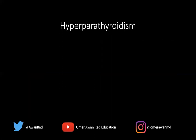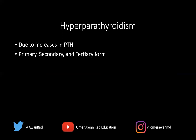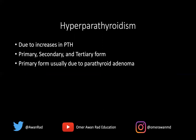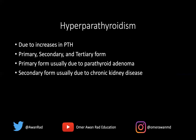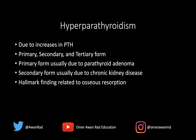This is an example of hyperparathyroidism. Hyperparathyroidism is due to increased parathyroid levels. There's a primary, secondary, and tertiary form. The primary form is most commonly related to a parathyroid adenoma. The secondary form is usually related to chronic kidney disease, which we see very commonly. The hallmark finding in all forms of hyperparathyroidism, although clinically they can be different, is osseous resorption — and that's what we're looking for radiographically, on CT, or on MRI.